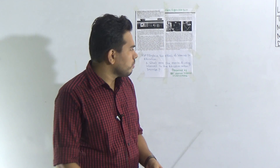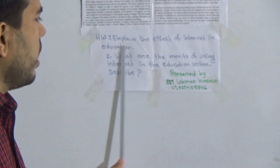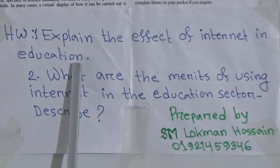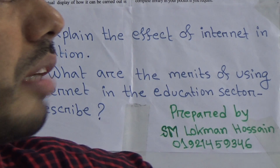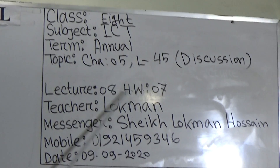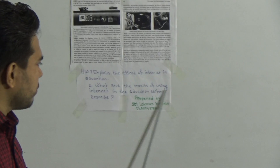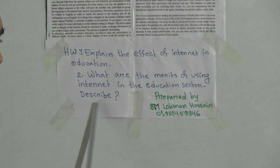Now let's take your homework. There are two short questions. Number one: Explain the effect of internet in education. This is HW number seven. You should remember that all lecture numbers and HW numbers are mentioned on the corner side of our board, and you should write them at the top of your HW copy. Number two: What are the merits of using internet in the education sector? Describe it.